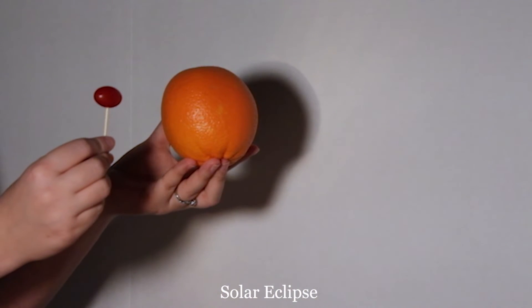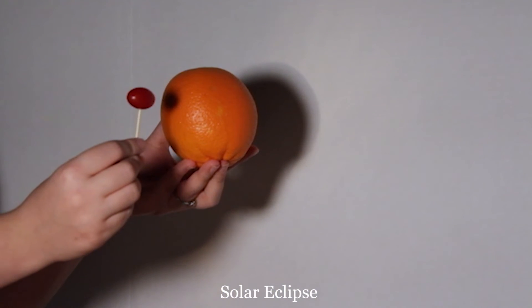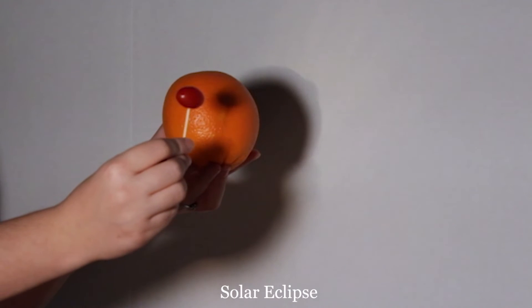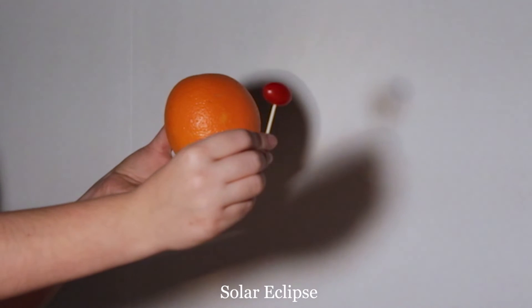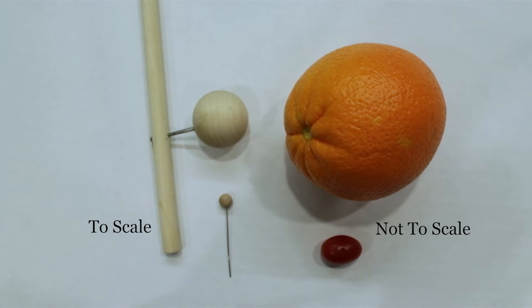To demonstrate a solar eclipse, we watch the tomato pass in front of the orange and allow it to represent the shadow that the moon casts on the Earth. Although this demonstration is useful for discussion, it is not remotely close to the correct scale.